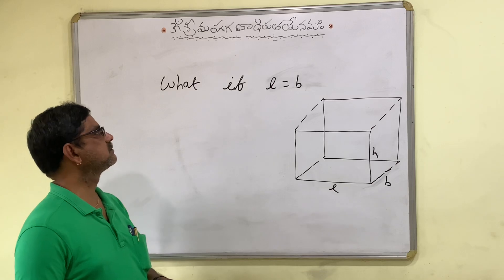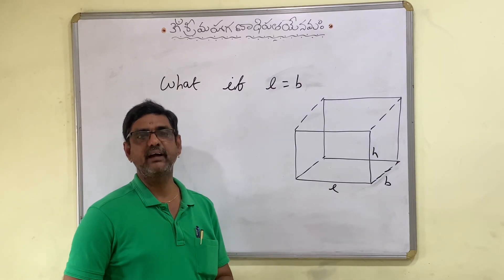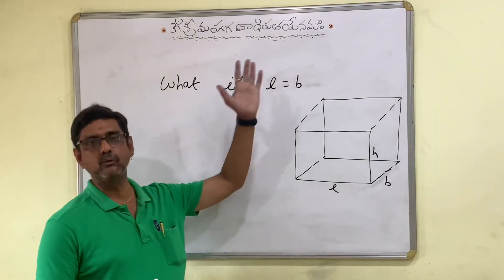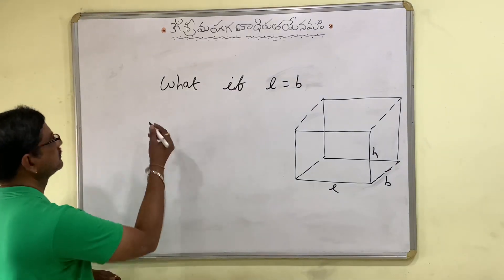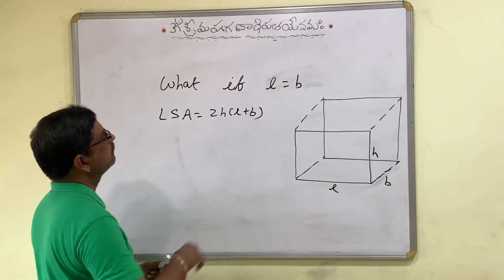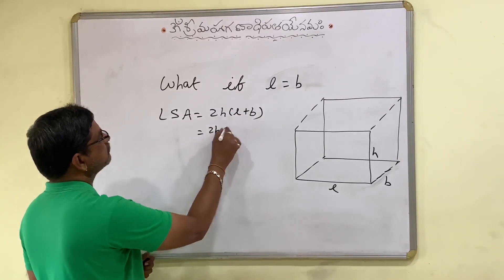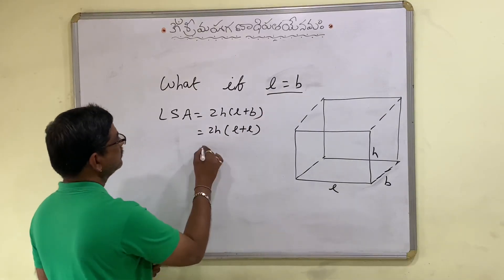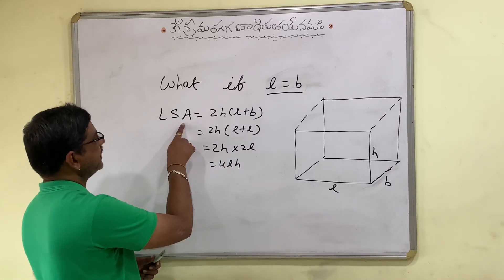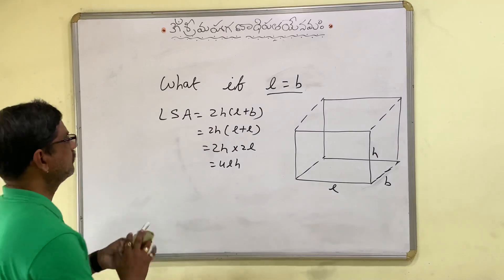Today my concept is I am considering a cuboid whose dimensions are L, B, H and my interest is how to calculate volume and surface area if L is equal to B. We know that the lateral surface area of a cuboid is 2H into L plus B. Now what happens if L is equal to B? Since L is equal to B, it becomes 2H into 2L, so 4LH. So the lateral surface area of cuboid if L is equal to B will be 4LH.